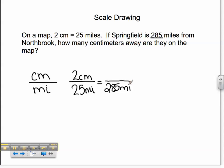I am now trying to find out the distance on the map. I will solve my proportion by cross-multiplying. 2 times 285 is equal to 570.